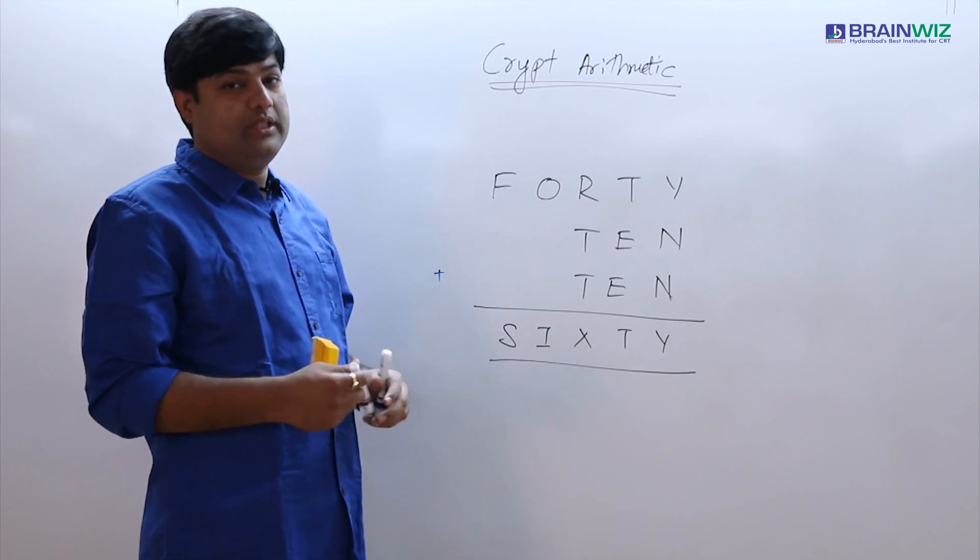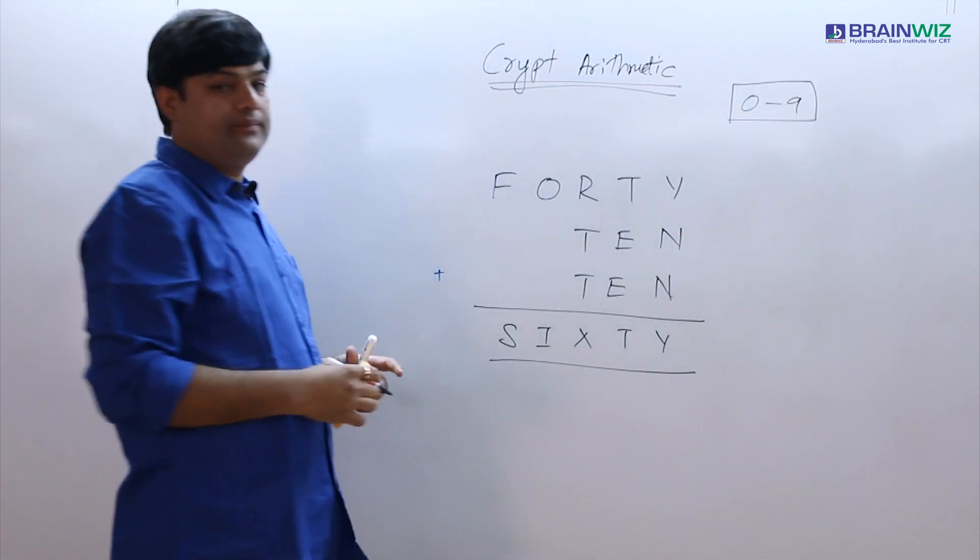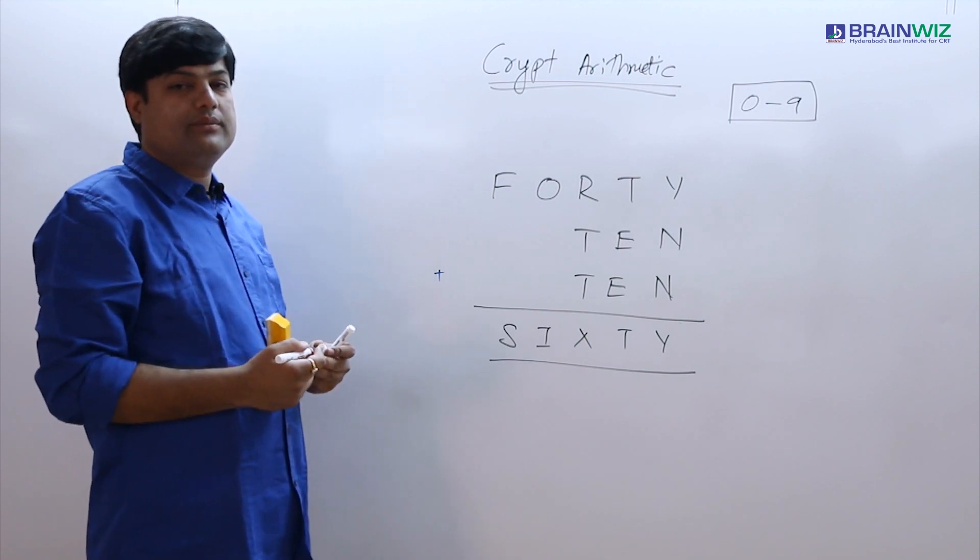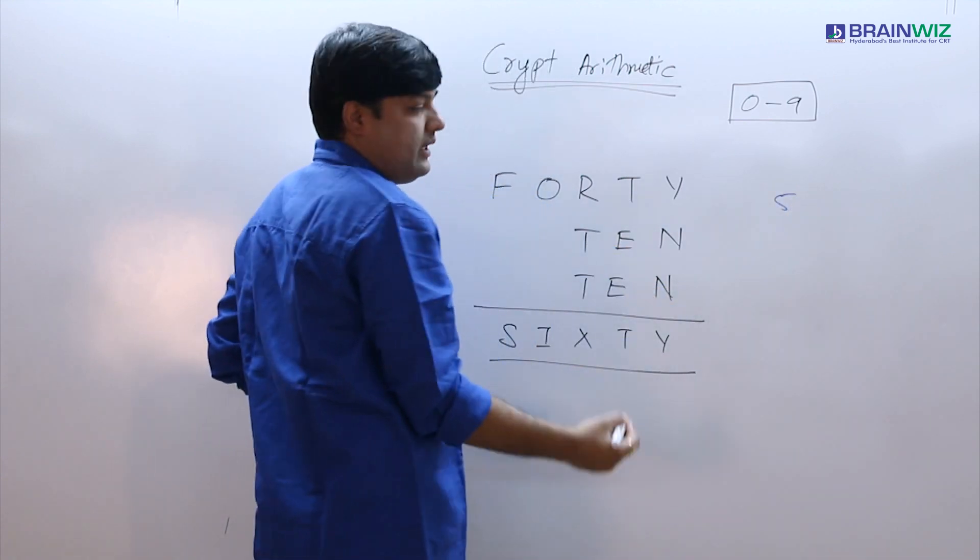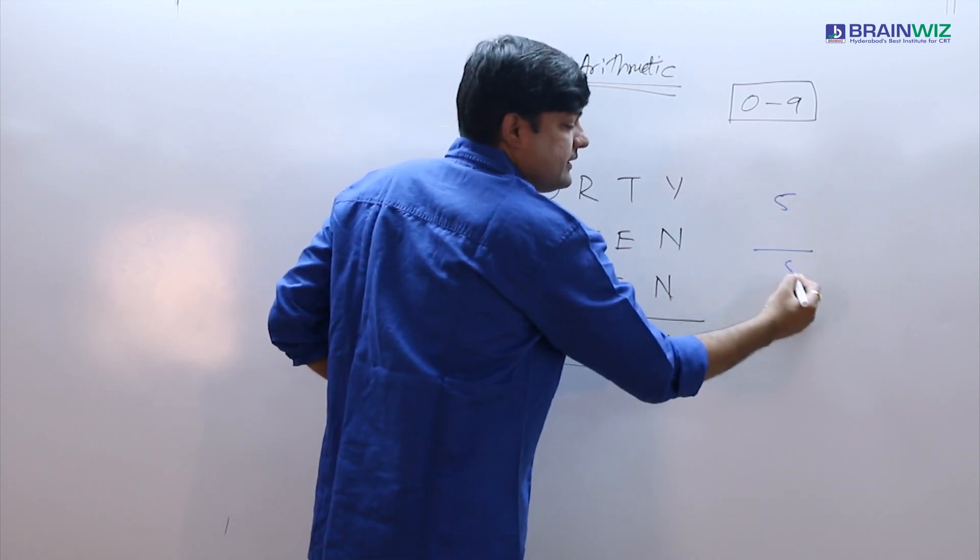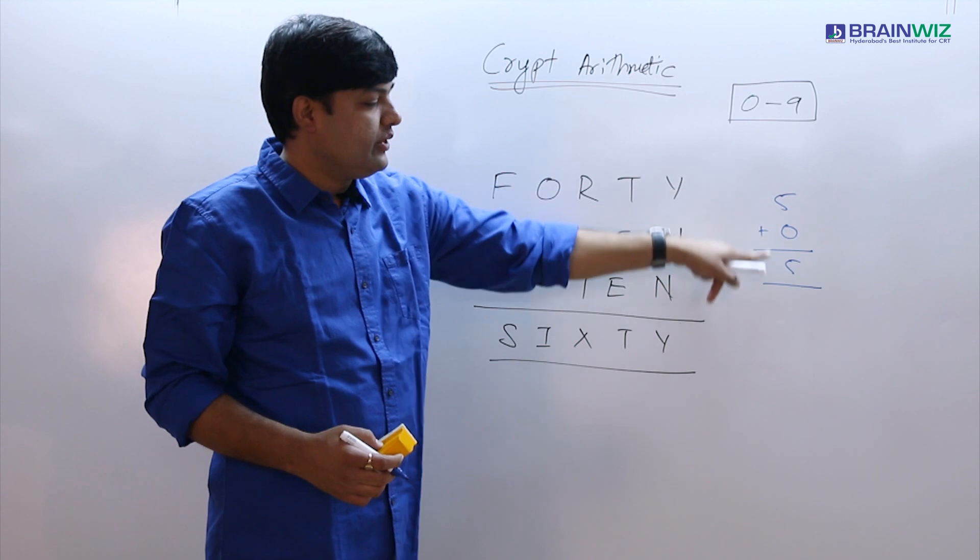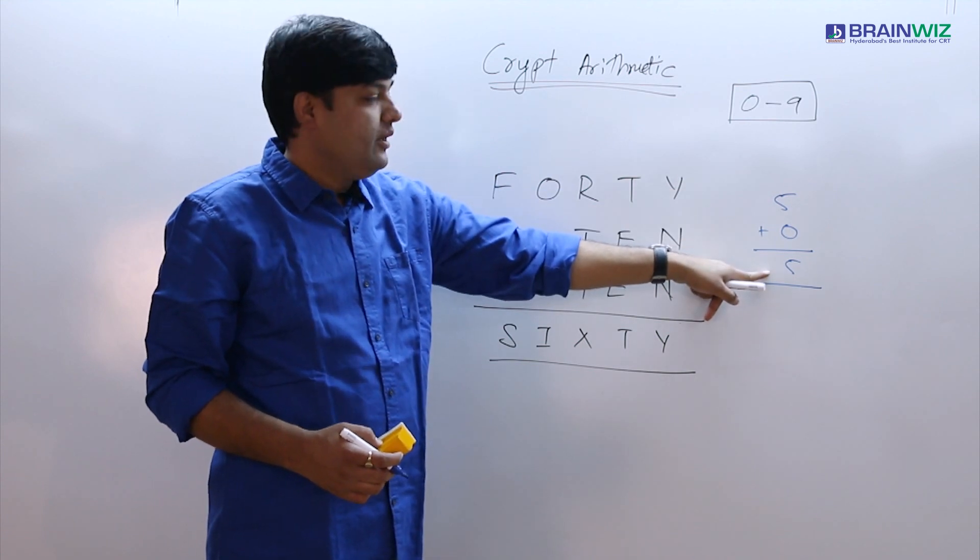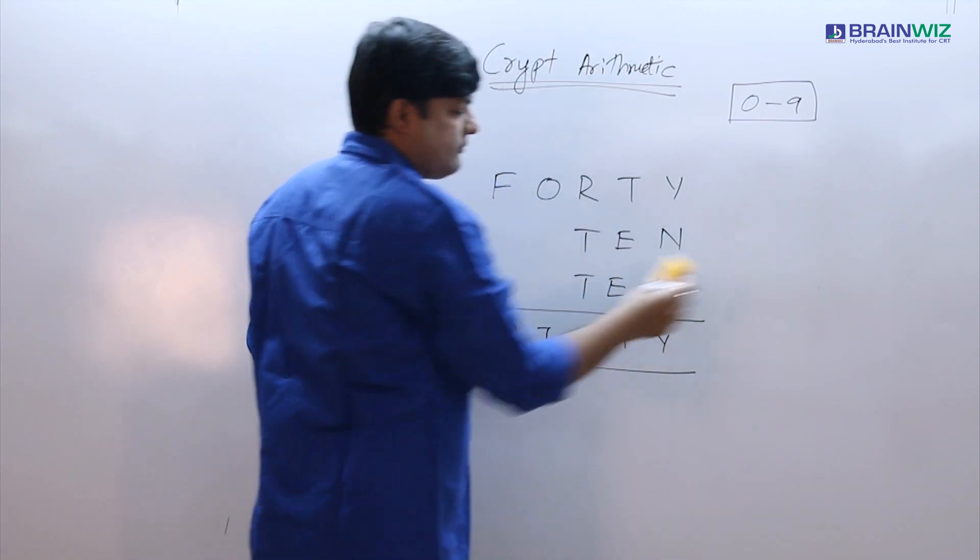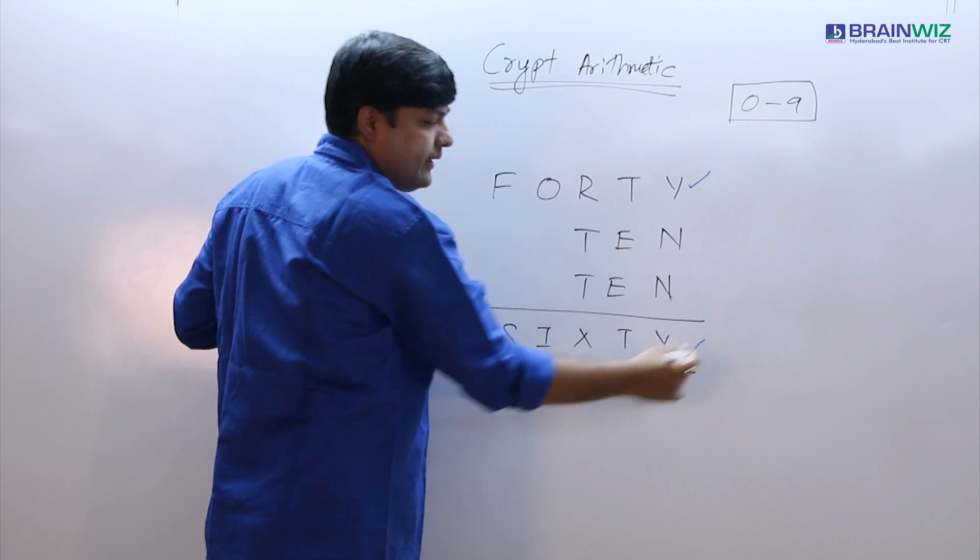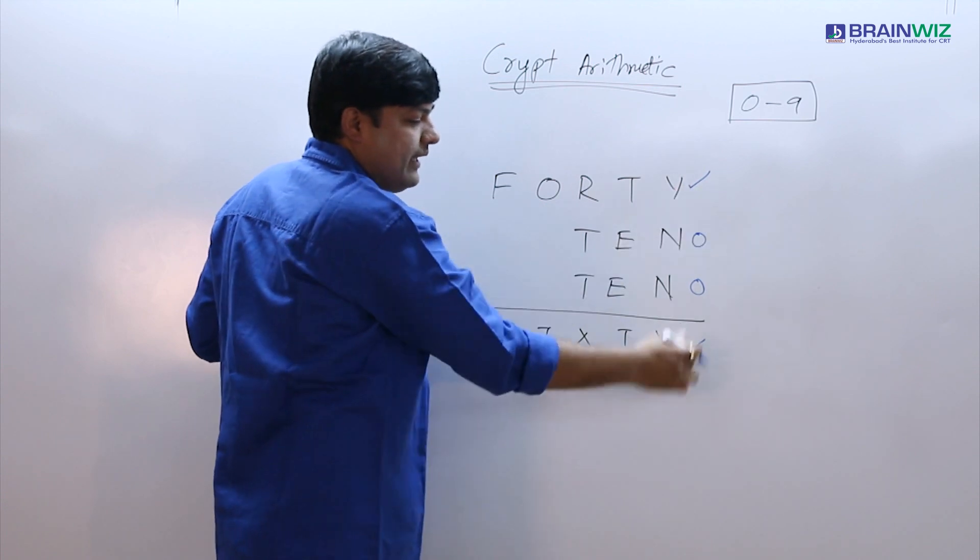We need to use the digits 0 to 9. Let me teach you a little bit. Here we have a digit Y and I am adding 0 to make digit Y. When you add 0 to any number, you get the same number back. Using this concept, we can understand that N value must be 0 so that we get the same value here.